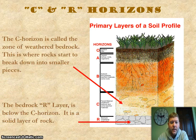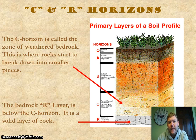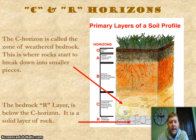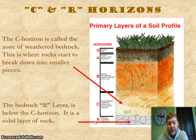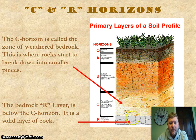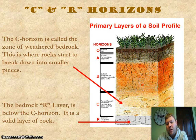Our next layer is the C layer, called the zone of weathered bedrock. This is where rocks start to break down into smaller and smaller pieces. Finally, our last layer is the R layer — R stands for rock. This is our solid bedrock, a solid layer of rock at the very bottom. Think of the rock holding all the soil up.